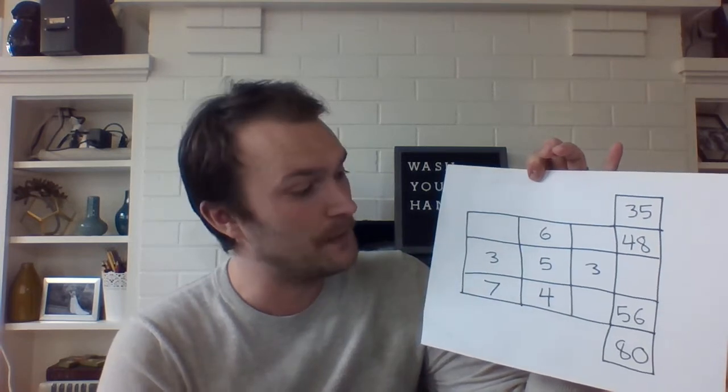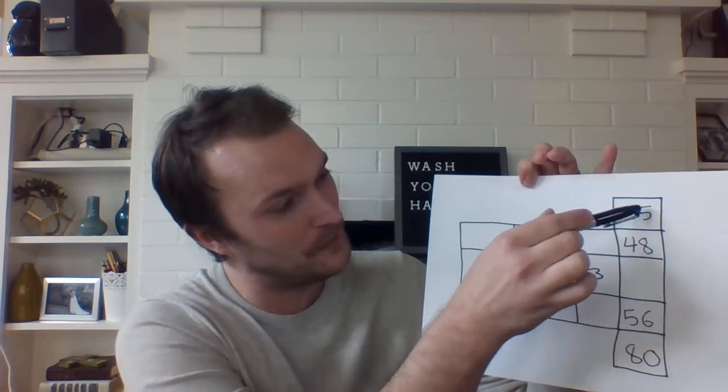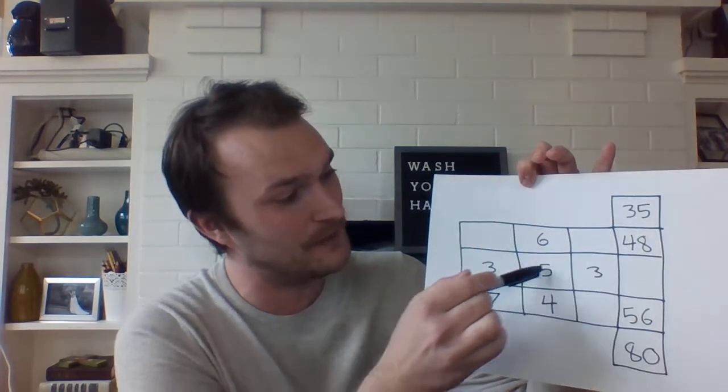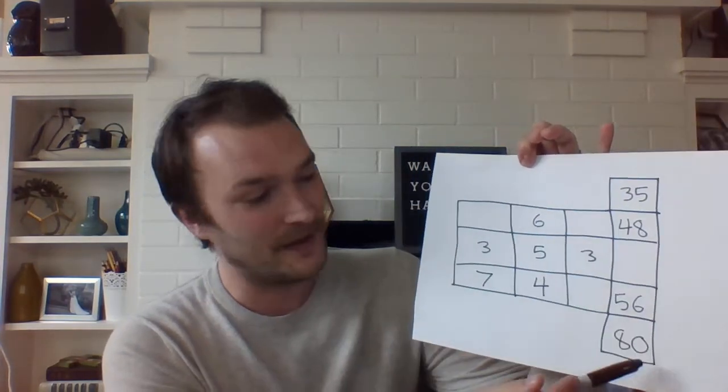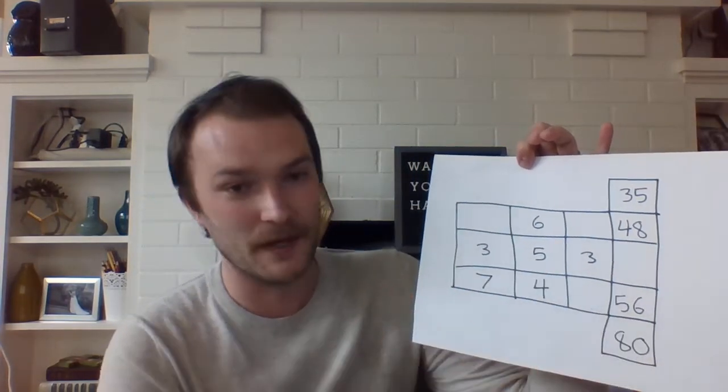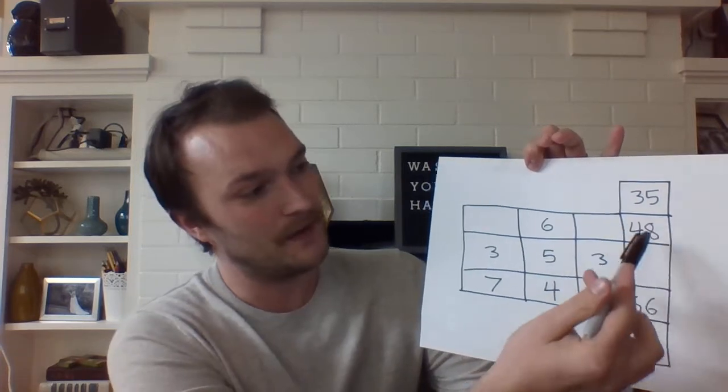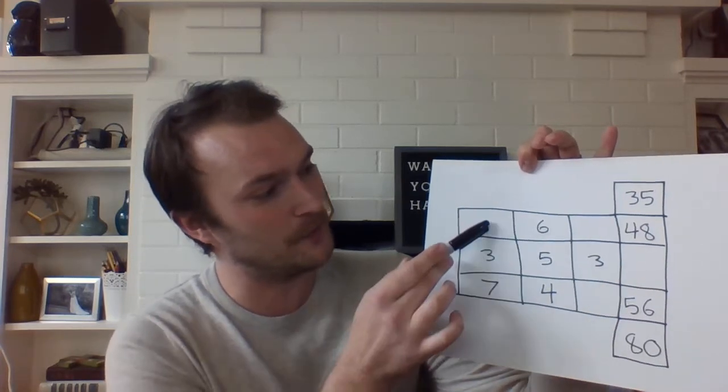Also if we multiply diagonally it'll be either this square if we're multiplying this way that will be the product of all of these numbers multiplied together or for this square right here that's the product of these three numbers multiplied together and then right here and here and here is when we multiply across like that.